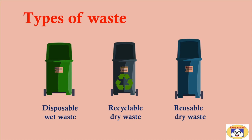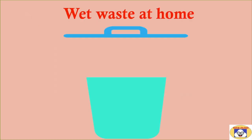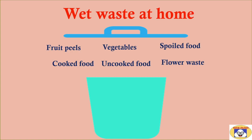These three types are: disposable wet waste, recyclable dry waste, and reusable dry waste. Now, what is disposable wet waste? We can list some of the things that are generated at home and consider them as wet waste.